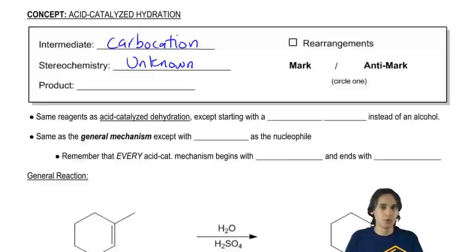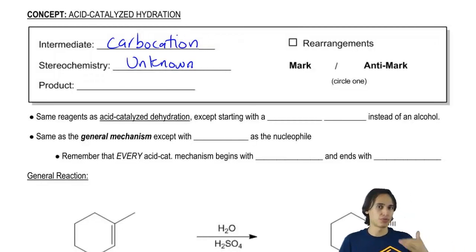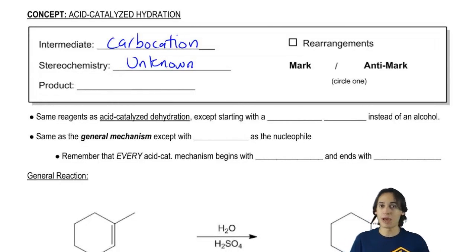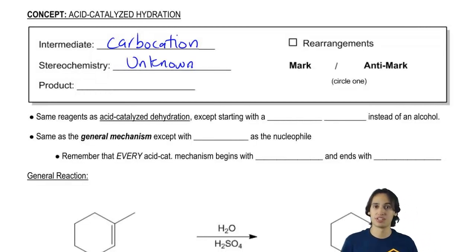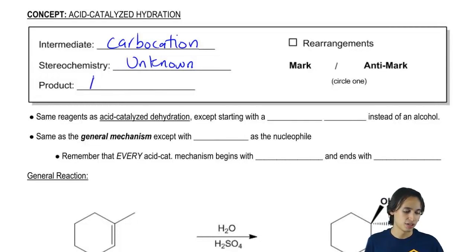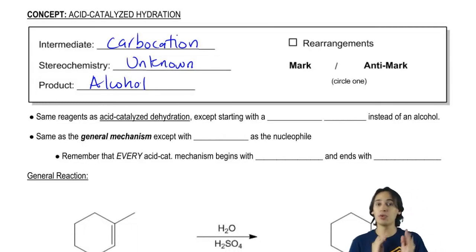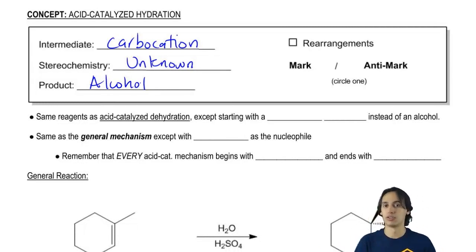So you don't really know if the nucleophile is going to attack from the front or the back. We don't really know what the stereochemistry is going to look like. The product, we do know what it is going to be though — the product is going to be an alcohol. So this is going to be a way to make double bonds into alcohols.